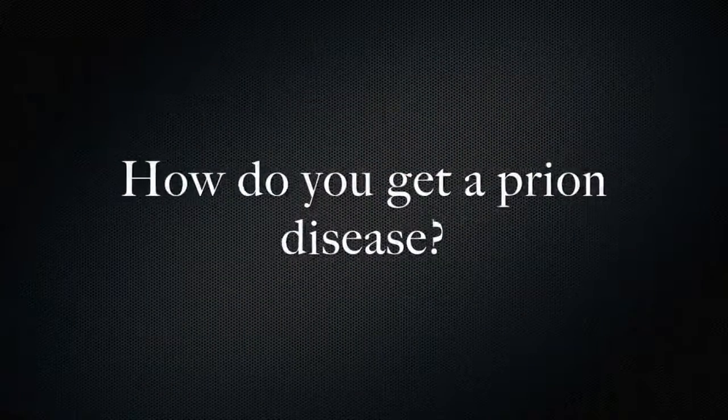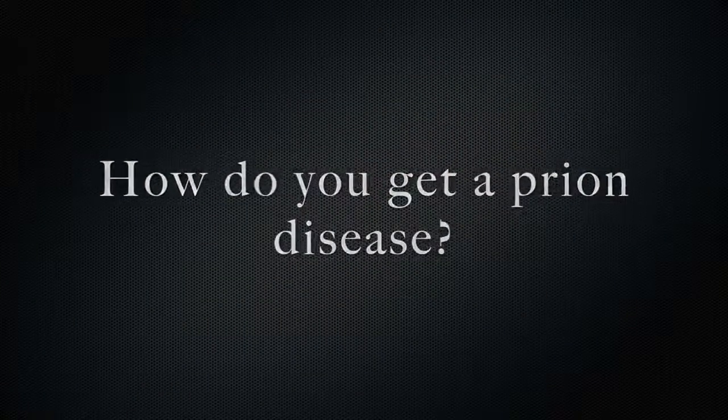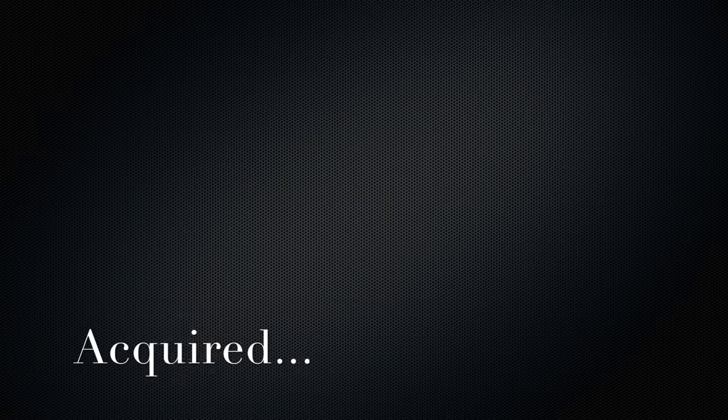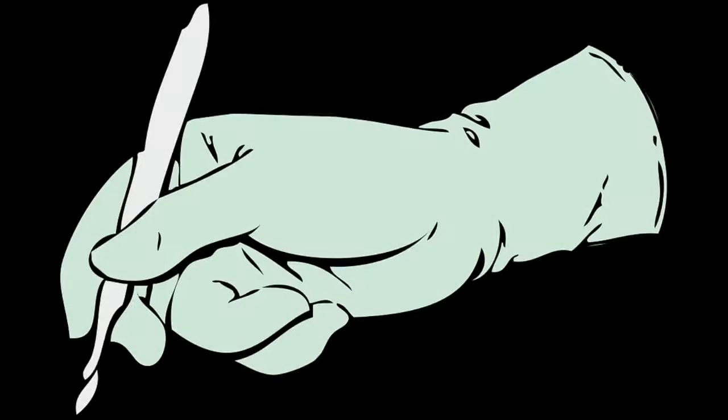There are three ways we can get a prion disease, and only about one in one million people get this disease from any method. The first is acquired, meaning you get it from one of a few ways: eating beef infected with mad cow disease, or from a surgery with infected surgical instruments.